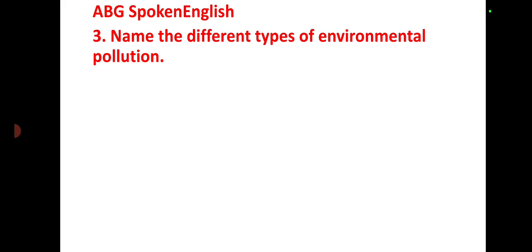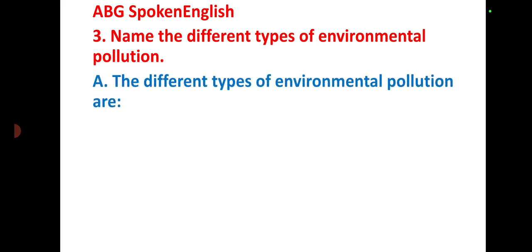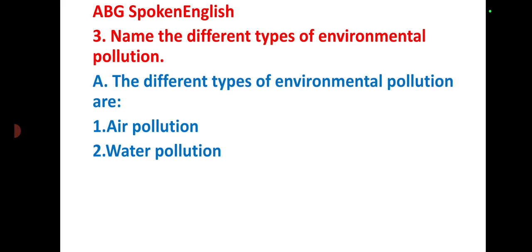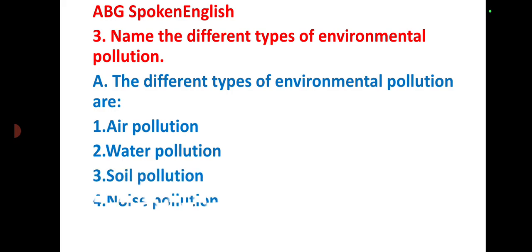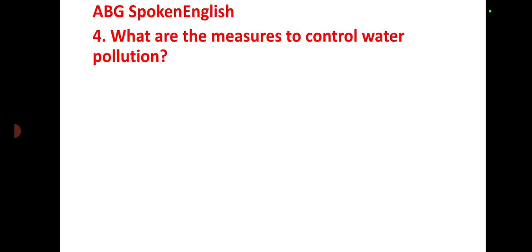Third question: Name the different types of environmental pollution. The different types of environmental pollution are air pollution, water pollution, soil pollution, and noise pollution. Next, the fourth question: What are the measures to control water pollution?